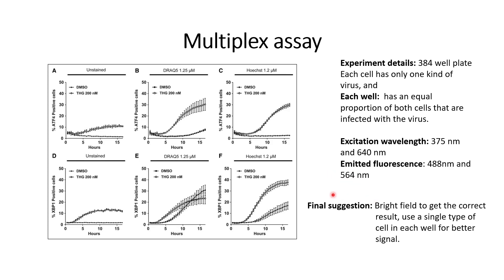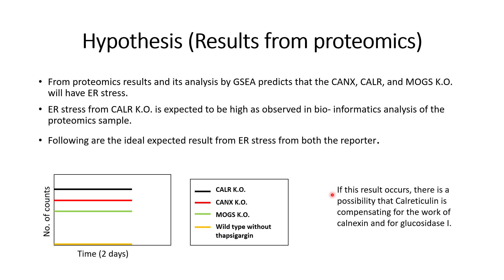This paper was used to measure ER stress in a personal research project. Four sample types were used: calnexin knockout, calreticulin knockout, MOGS knockout, and wild type. Based on proteomics data and bioinformatic analysis, the hypothesis was that calreticulin knockout would show the highest ER stress, followed by calnexin knockout, then MOGS knockout, and finally wild type which has no ER stress.